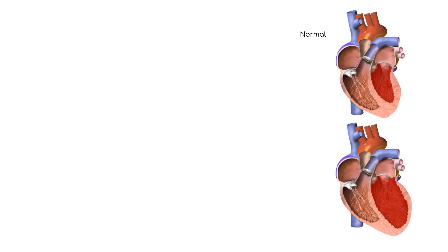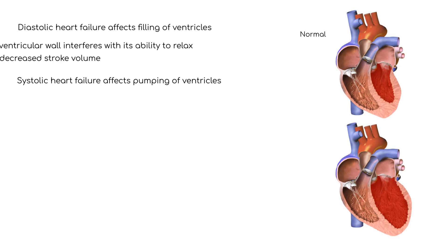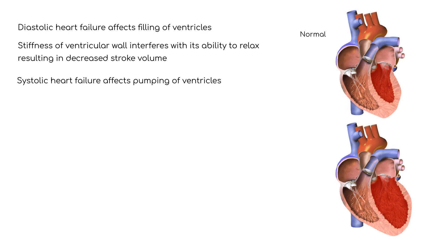Heart failure can affect the right and/or left sides of the heart. Left-sided heart failure can affect the filling of the ventricles, called diastolic heart failure, and the pumping of the ventricles, called systolic heart failure. In diastolic heart failure, stiffness of the ventricular wall interferes with its ability to relax, resulting in problems with the amount of blood entering the ventricle — decreased stroke volume. In systolic heart failure, the ventricular wall is damaged, resulting in the inability to pump blood out of the ventricle.